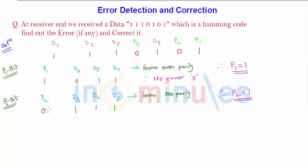So what will happen due to 1? There will be 4 ones and form even parity. Hence there is an error occurred and I will set this bit to 1. Error occurred therefore it is 1.